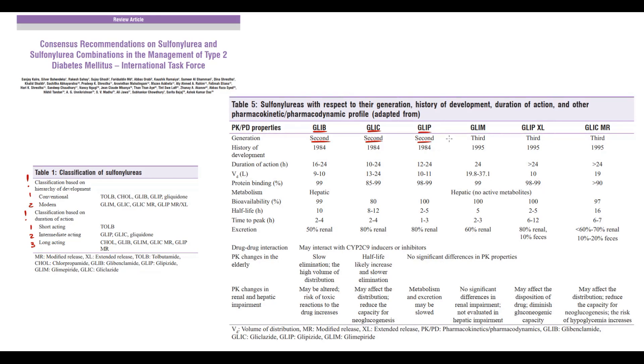The modern sulfonylureas are glimepiride, glipizide with extended release, and gliclazide with modified release. Generally, all modern sulfonylureas have a lesser amount of side effects. So, there are safer options.